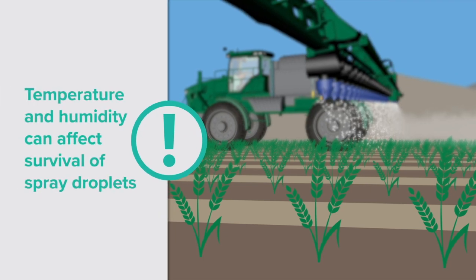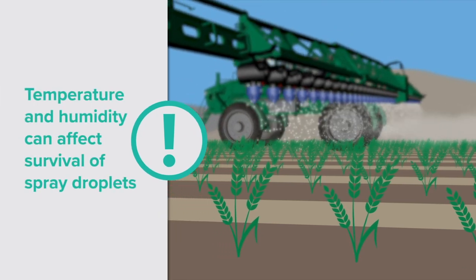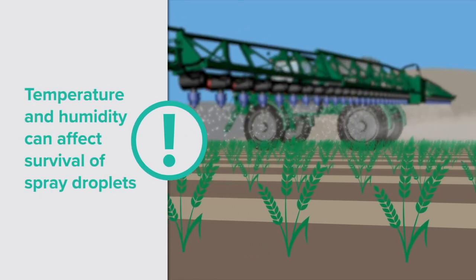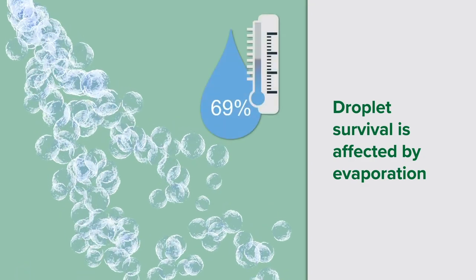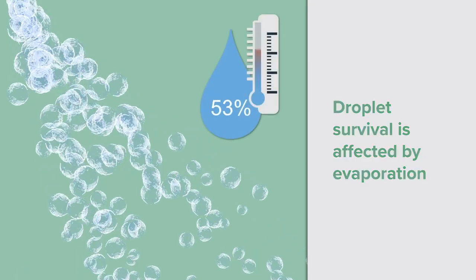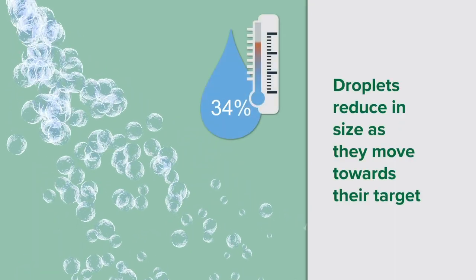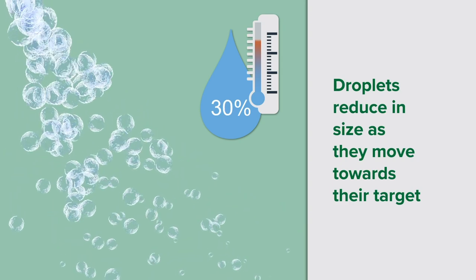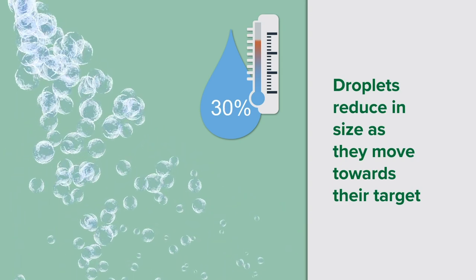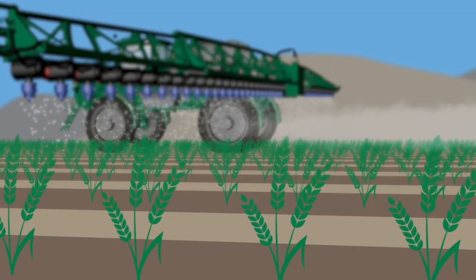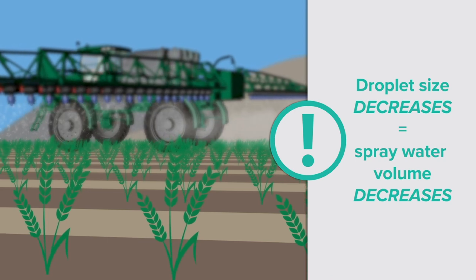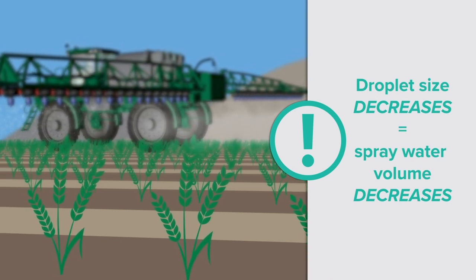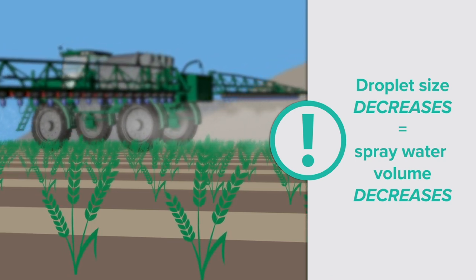It's also important to understand the impact temperature and humidity can have on the survival of spray droplets. Droplet survival is affected by the rate at which water is evaporated from it. As temperature increases and humidity decreases, droplets reduce in size as they move towards their target, resulting in greater potential for spray drift. Remember that as droplet size decreases, so does total spray water volume due to evaporation, which can negatively affect spray coverage and product efficacy.